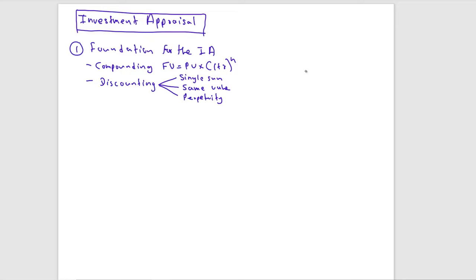For a single sum, you find the present value by multiplying your cash flow by the discounting factor. For an annuity, you calculate the total present value as the cash flow multiplied by the discounting factor for each year (year one, year two, year three, etc.) and take the addition, or simply multiply the common cash flow by the annuity factor.